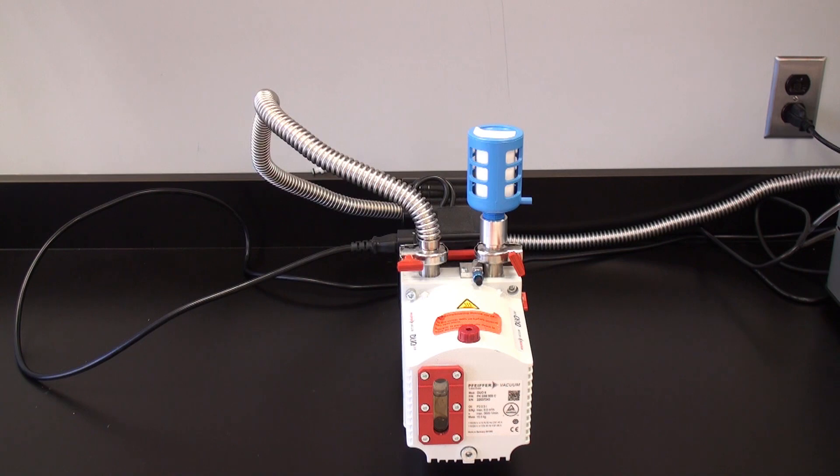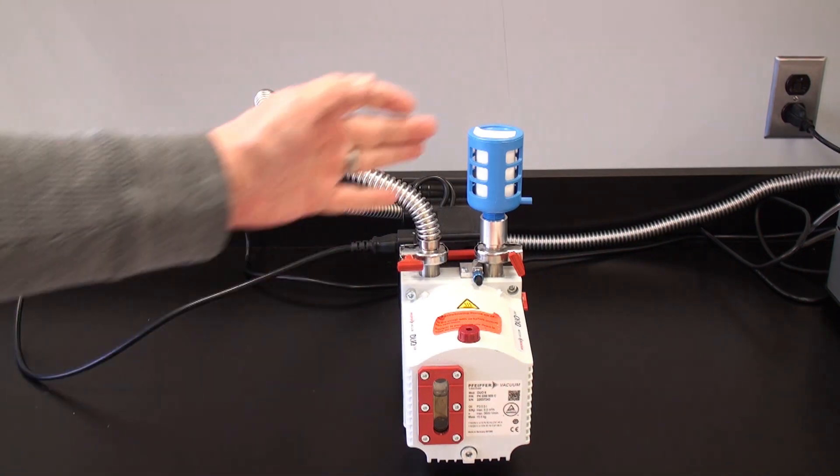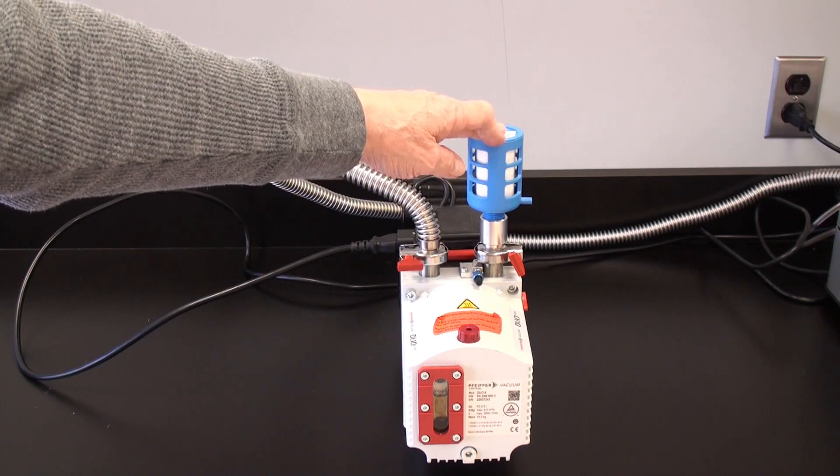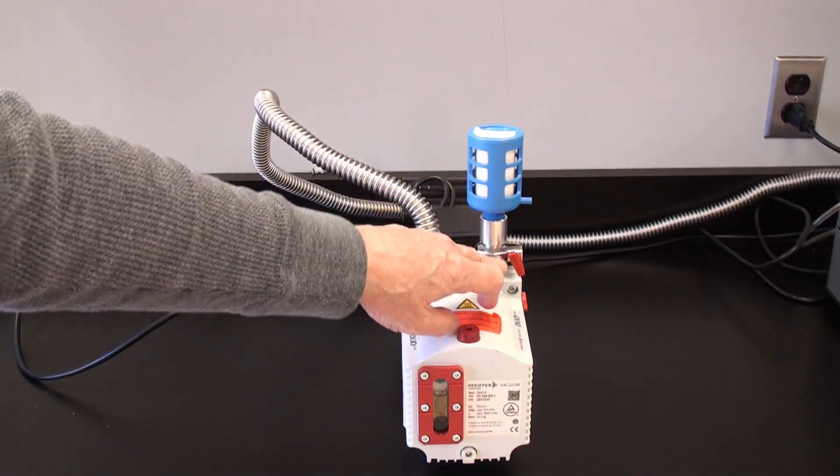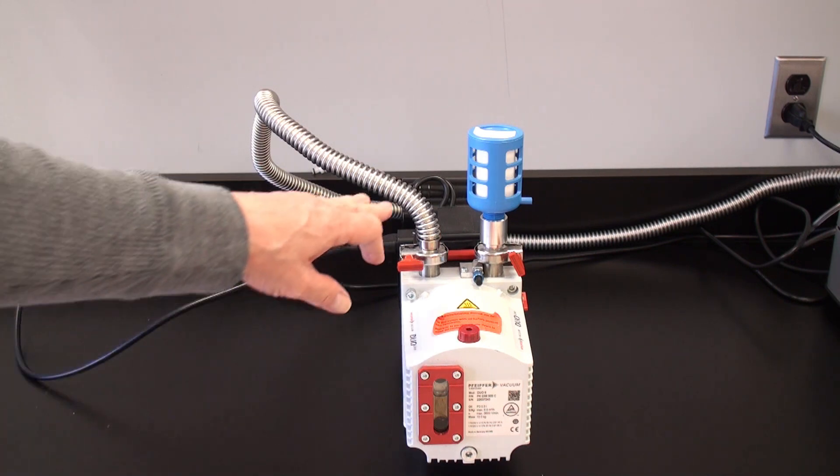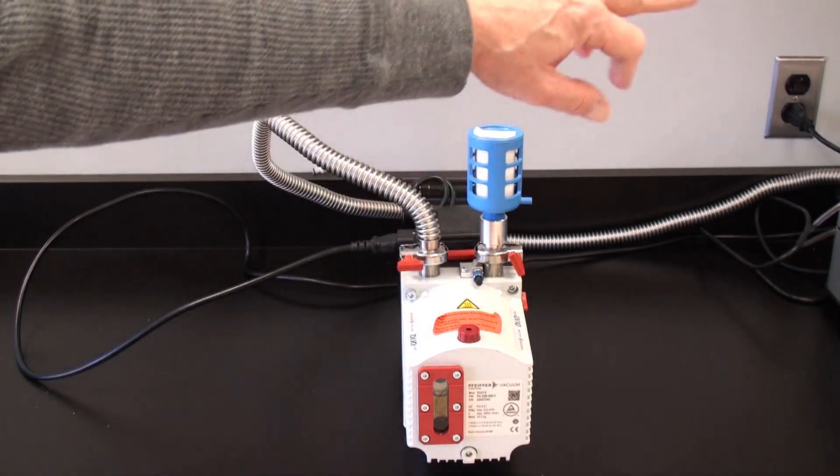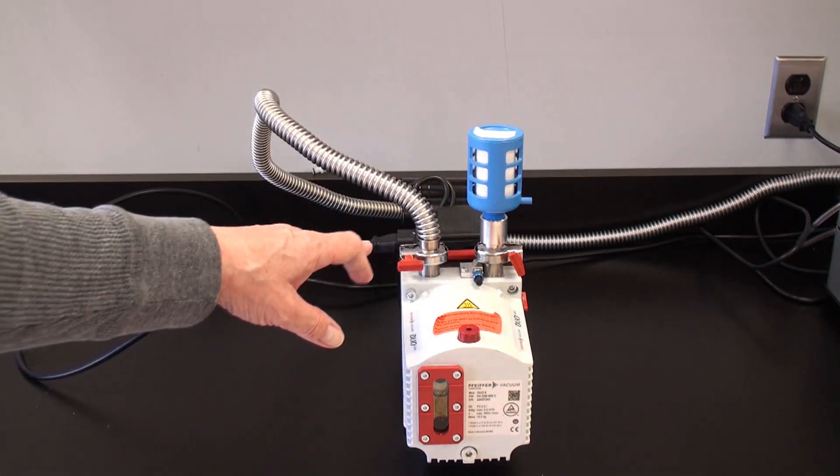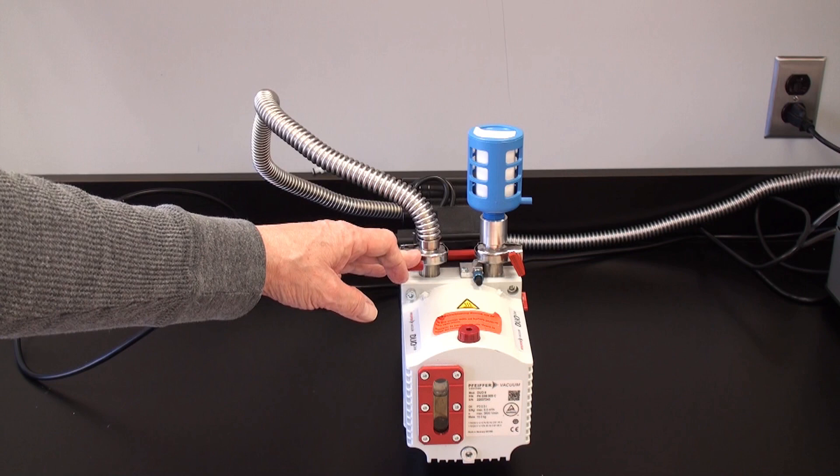This is the Duo 6 pump which is usually purchased with the instrument. You can see the blue oil mist filter mounted in its adapter on the right hand exhaust port from the pump. You can see the vacuum line which goes to the MiniQS attached to the left hand port.